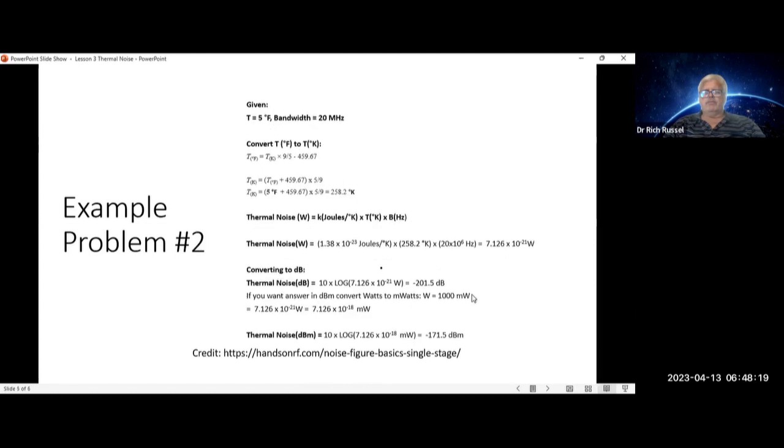Let's do one more. If your temperature is 5 degrees Fahrenheit, so that's a lot cooler, and your bandwidth is 20 megahertz, first thing you do is you convert that 5 degrees Fahrenheit to Kelvin, that'll give you 258.2 degrees Kelvin.